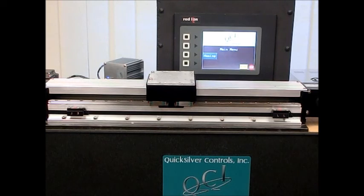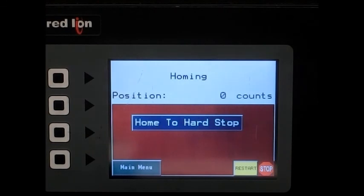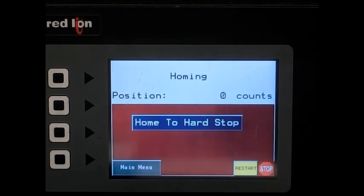First, we'll home the motor to a hard stop to find zero. A home to hard stop eliminates the need for a home sensor. So I'll go ahead and go to the homing menu and touch the home to hard stop button.